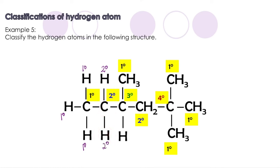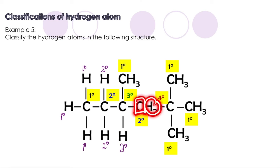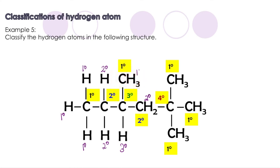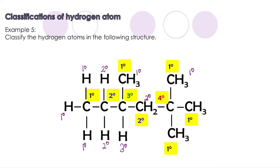This hydrogen is attached to a tertiary carbon, so it is a tertiary hydrogen. This hydrogen is attached to a secondary carbon, meaning it is a secondary hydrogen. This hydrogen is attached to a primary carbon, so it is a primary hydrogen — the same goes for this one, this one, and this one. All of those hydrogens are primary hydrogens.